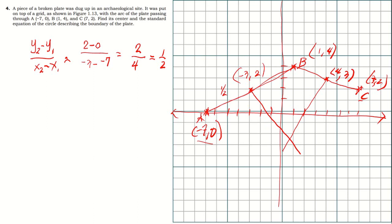Therefore, the slope of the perpendicular bisector of AB is negative two, because their product must equal negative one. Similarly, for chord BC with points one, four and seven, two: slope equals two minus four over seven minus one, which is negative two over six, equal to negative one third. Therefore the slope of the perpendicular bisector of BC is positive three.